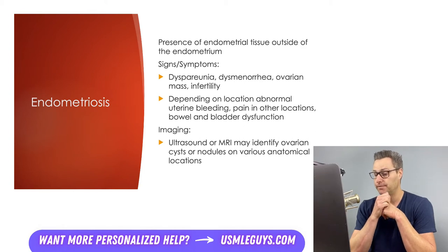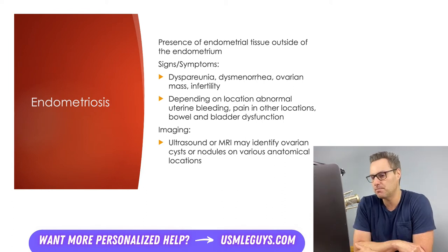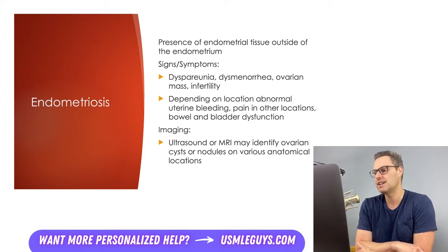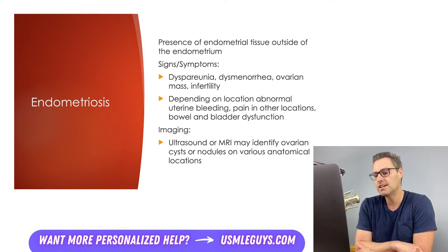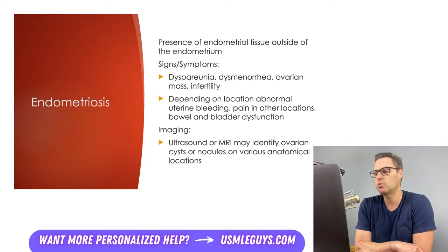If presented with an ovarian cyst filled with chocolate-colored syrup-like material, think endometriosis of the ovary. Patients present with dyspareunia and/or dysmenorrhea, an ovarian mass (the chocolate cyst), and infertility. Depending on anatomic location, other symptoms may include abnormal uterine bleeding, lower back pain, urinary symptoms like dysuria, frequency or urgency, and bowel problems like diarrhea or constipation. In rare cases, such as endometriosis in the lungs, patients may present with hemoptysis or pneumothorax. Physical exam is typically normal, though ectopic tissue can rarely be visualized on the cervix or vaginal mucosa.